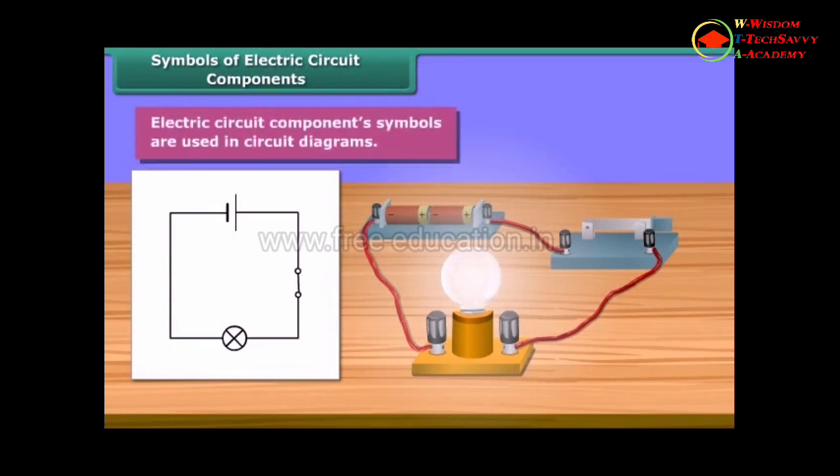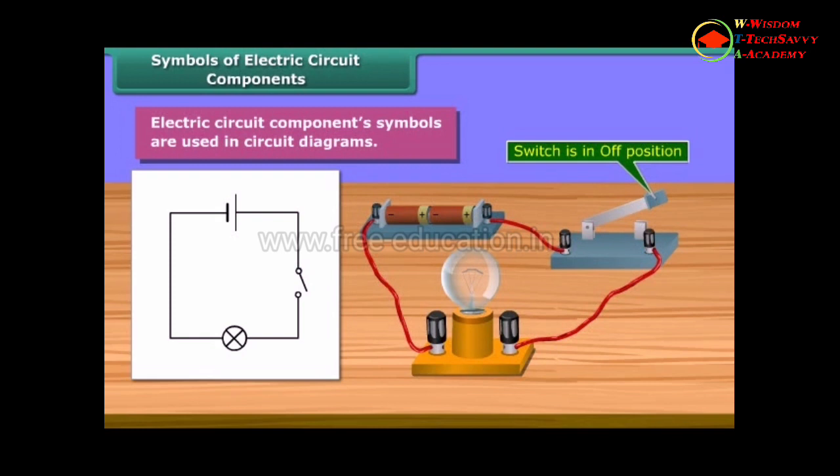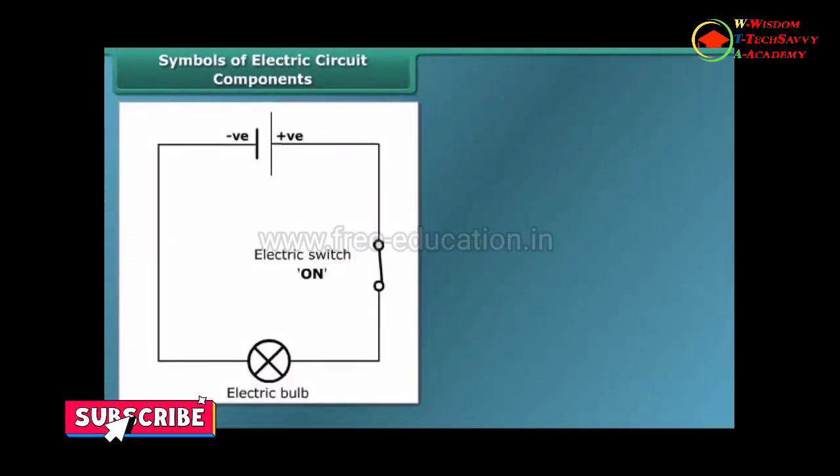Symbols of electric circuit components. Electric circuit component symbols are used to make circuit diagrams. It is much easier to represent a circuit diagram using symbols. This is the symbol of a switch in on position. This one is in off position.